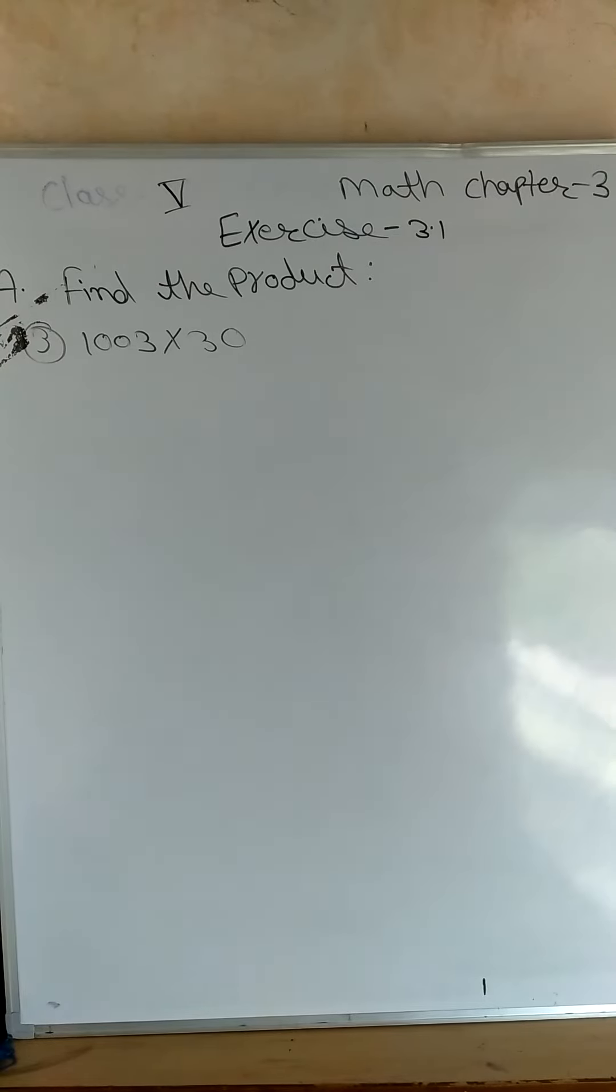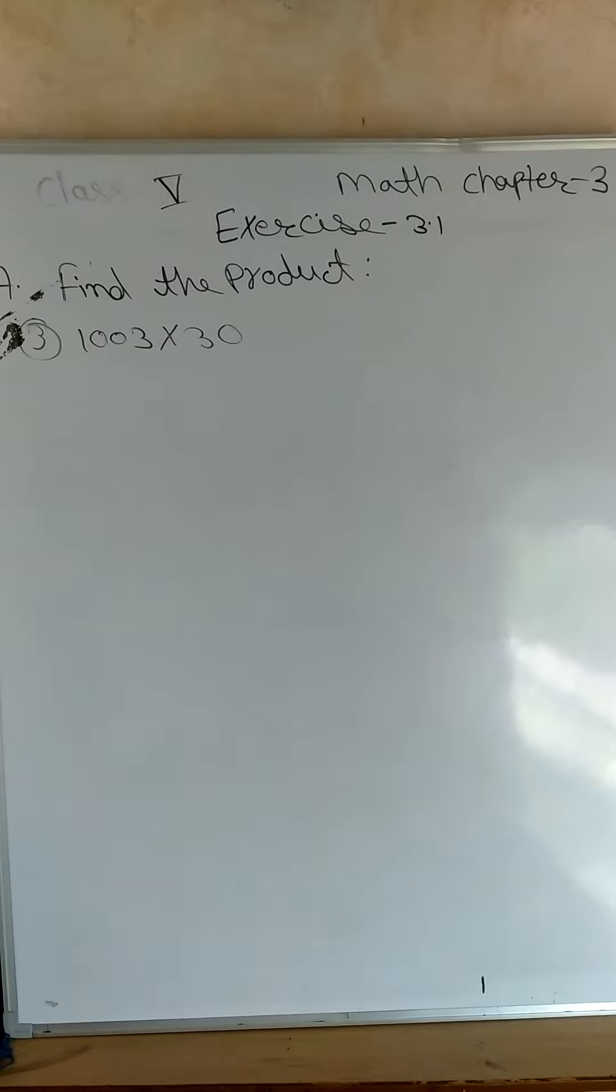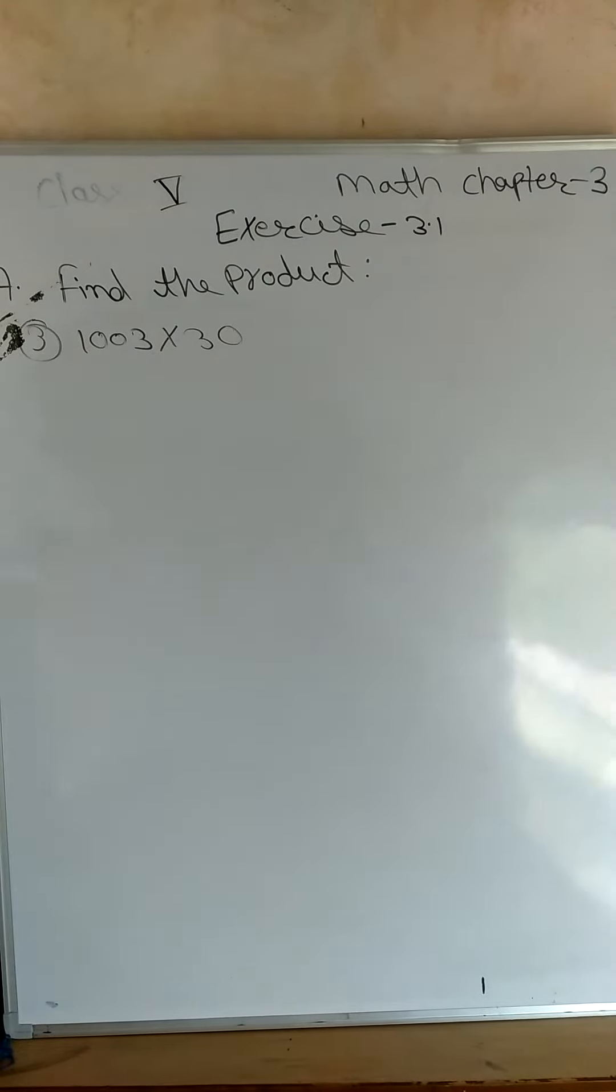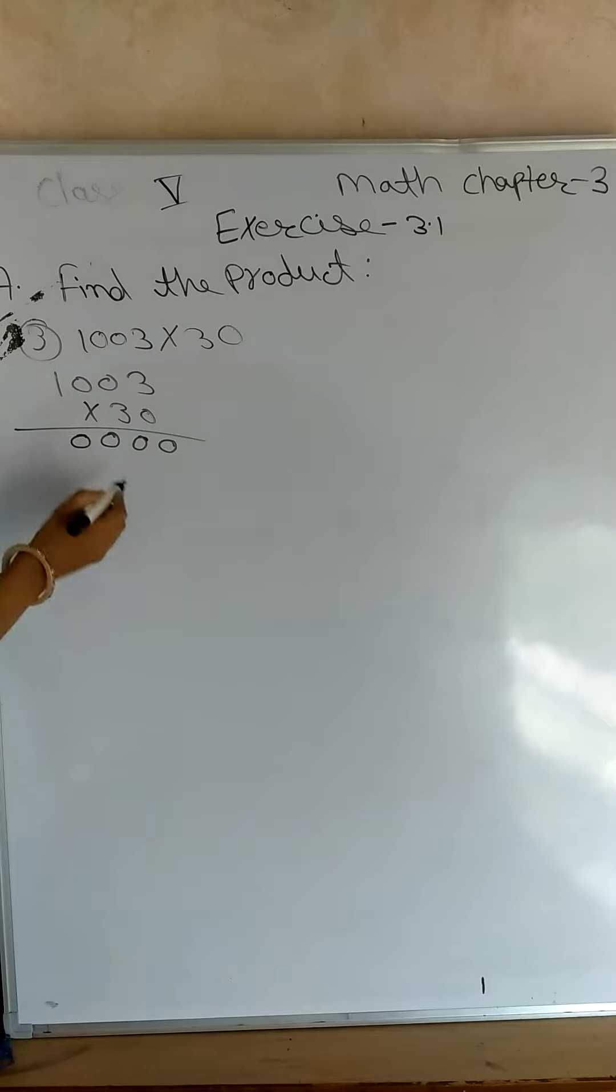Next question is question number 3: 1003 multiply by 30. Okay, 0 ko 3 se kia, 0. 0 ko 0 se kia, 0. 0 ko 1 se kia, 0. Aap nai kia multiply ka sign laga.